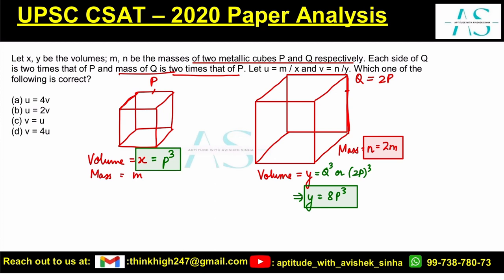Let's see what is given in the question. U is m by x. U is equal to m upon x. We also have one more relation that says v is equal to n by y.